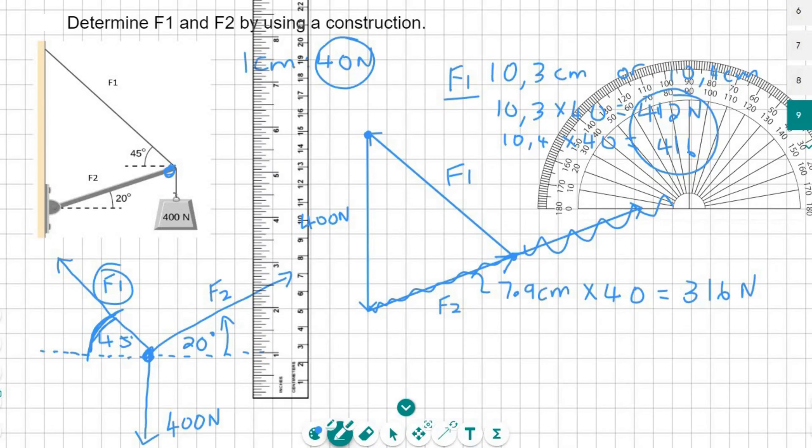Now yours might be a little bit different to mine, which is absolutely fine. The perfect answer is 312. That is like the correct mathematical way. So in summary, F1 is approximately somewhere between 412 and 416 newtons, and F2 is somewhere between probably 310 and 314. So try to get somewhere close to that.